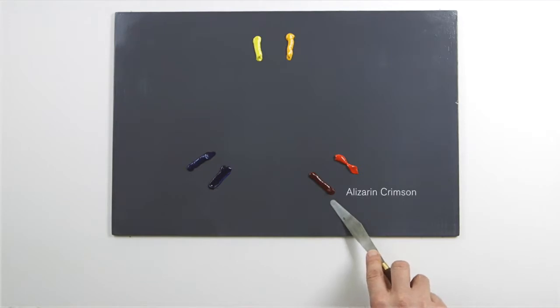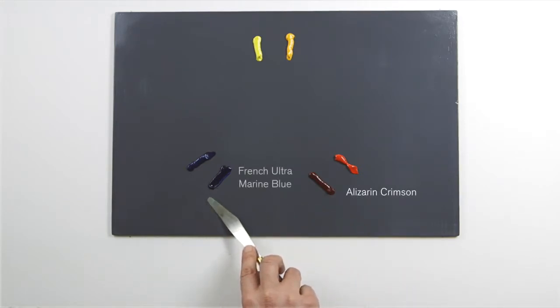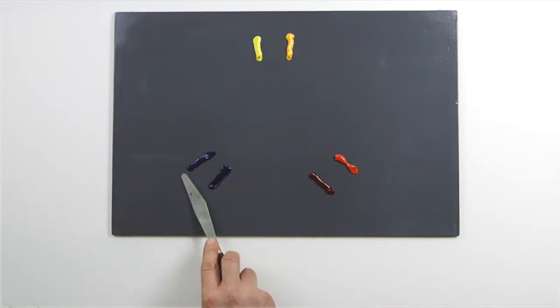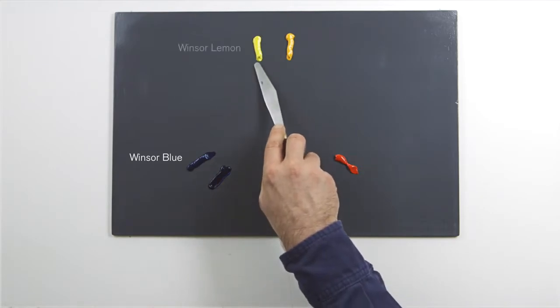Here the alizarin crimson has a violet bias and so does the French ultramarine blue. Finally, Winsor blue has a green bias which leads us back to Winsor lemon.